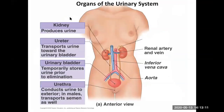The kidney is where filtering happens. Associated organs handle transport and storage. The ureter transports urine from the kidney. The bladder stores it. The urethra allows eventual excretion.